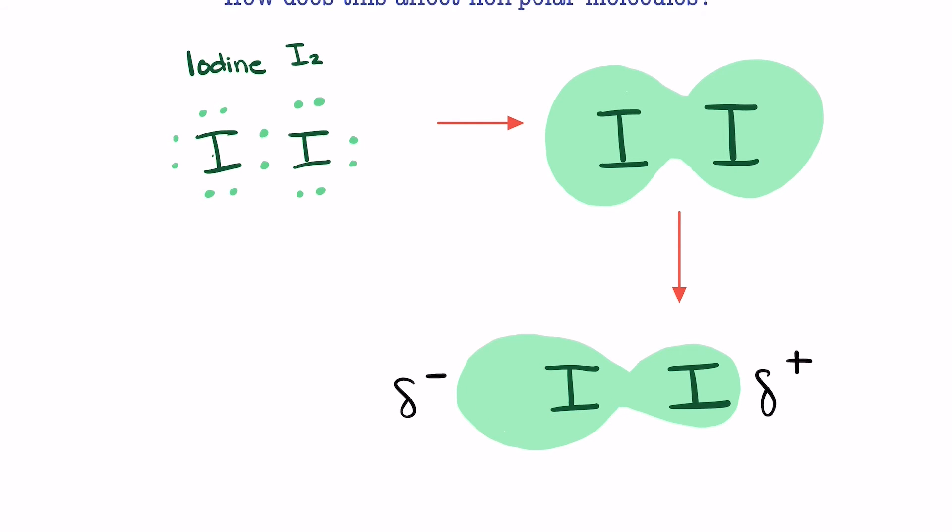Because electrons are electronegative, that means this side of the molecule, for a split second in time, becomes electronegative, and because this side is electronegative, this side becomes electropositive.